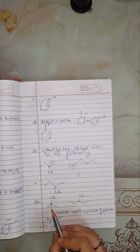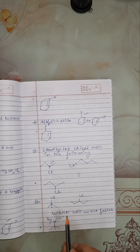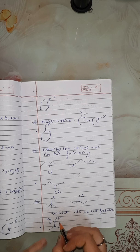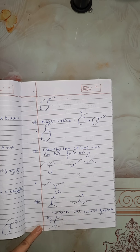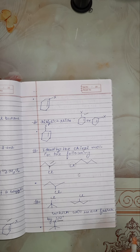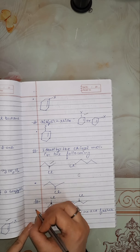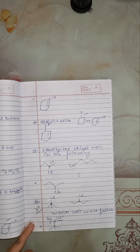Next, these two compounds are given and they ask which will react faster by SN1. In SN1, the formation of a carbocation takes place. In this one, a tertiary carbocation will form, and in the other, a secondary carbocation will form. Since tertiary carbocation is more stable, it will react faster by SN1.